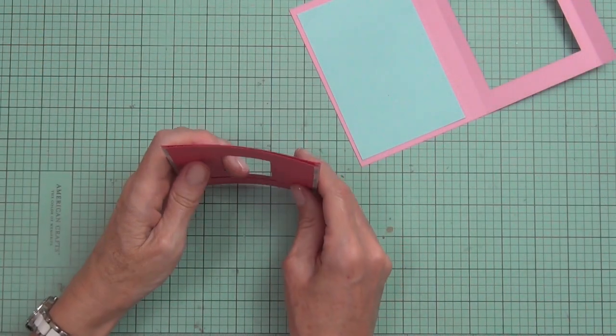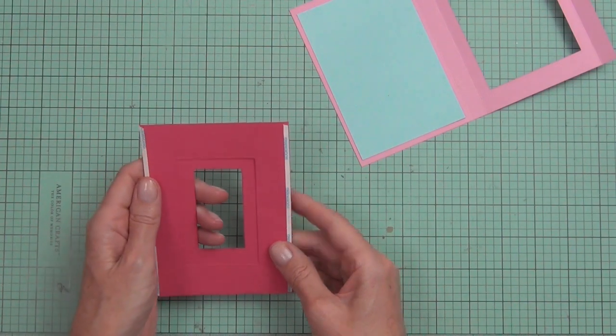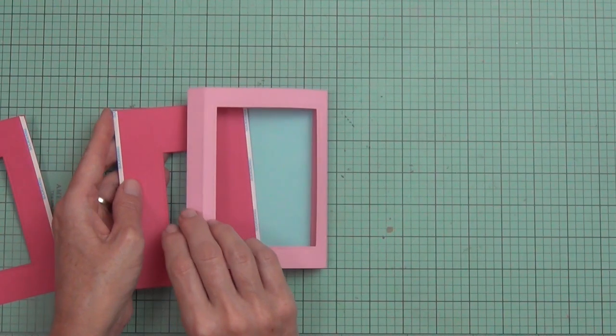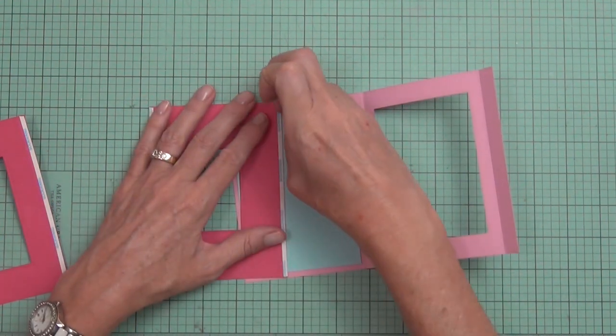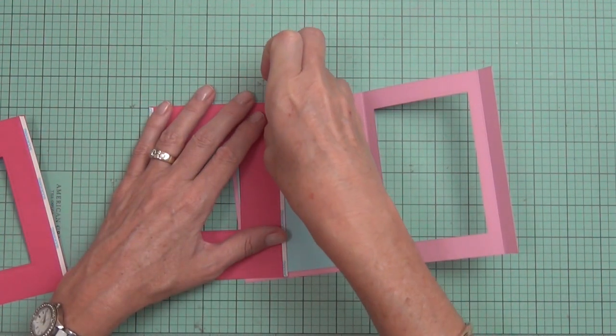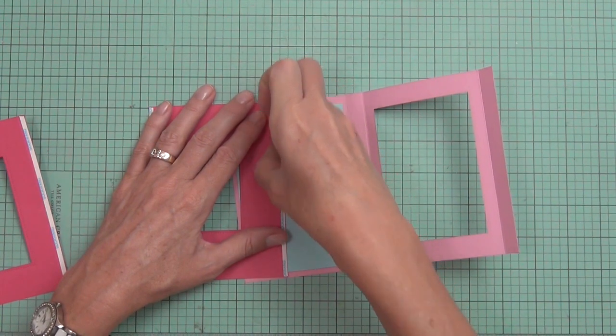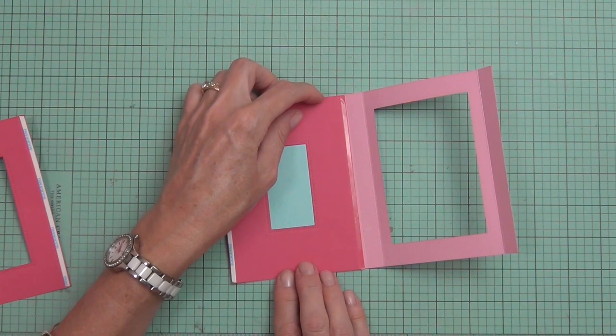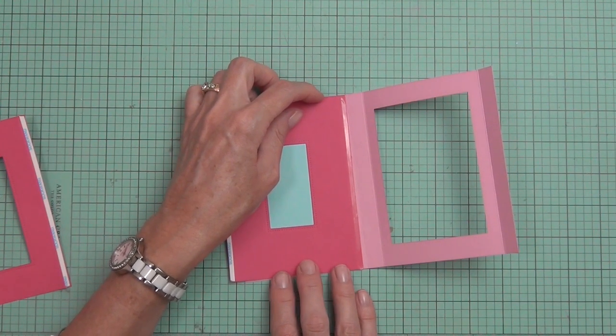You could also stamp a pattern or leave it blank, it's whatever you want to do depending on what you're going to fill your inside tunnel with, what stamps you're going to use. Then I've added some score tape. This is a really strong hold score tape and this is the eighth of an inch.